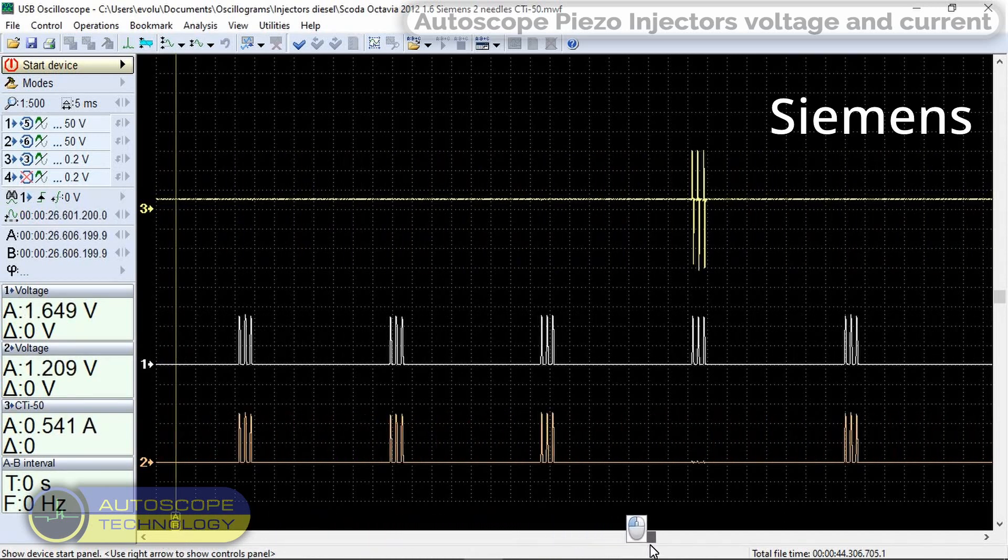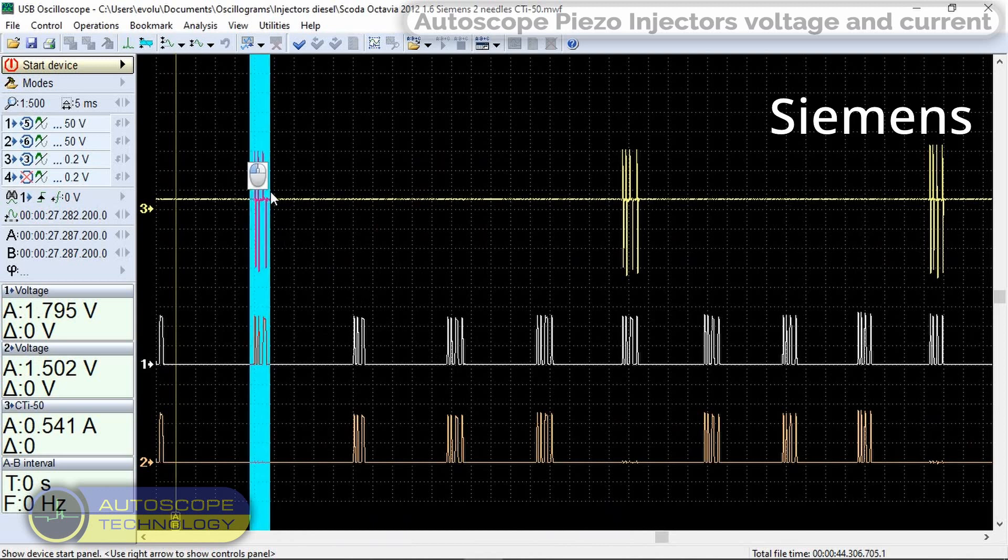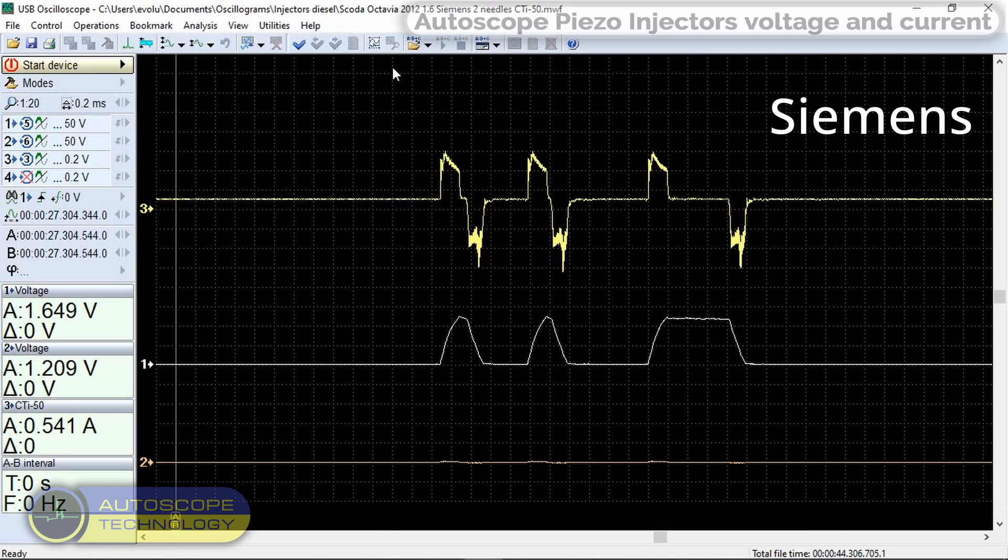This is how the voltage pulses look on the supply wire and on the control wire. And this is what the current pulse looks like. For clarity, we increase the signal sweep.